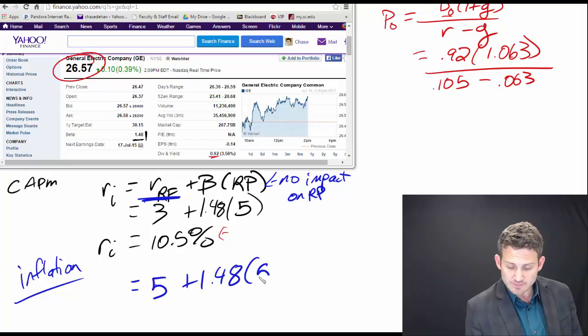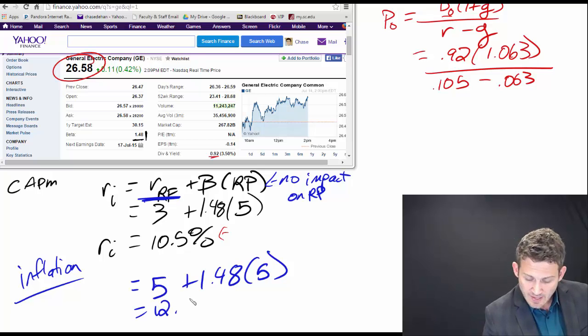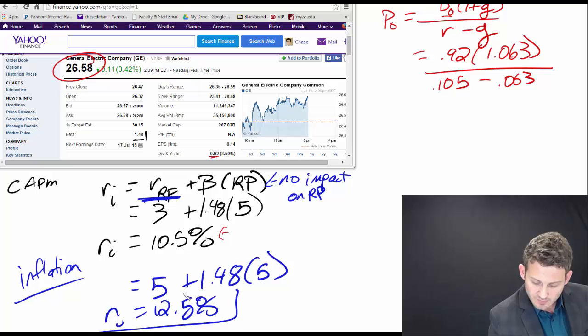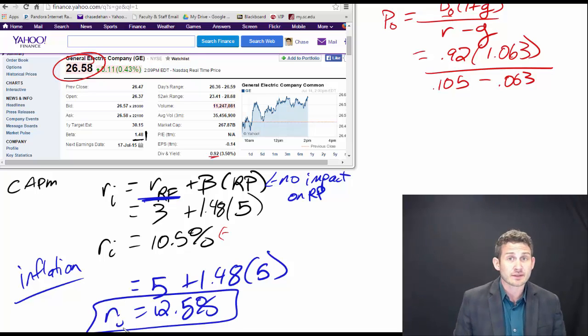This other stuff here is gonna remain the same. And so that means that we're gonna have a required return now on GE of twelve point five percent.